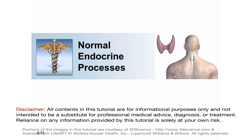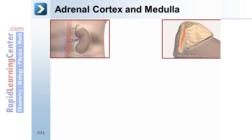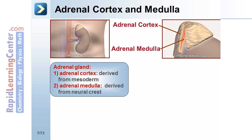We begin with a discussion of normal endocrine processes, starting with a review of the adrenal gland. The adrenal gland can be divided into the adrenal cortex, derived from mesoderm, and the adrenal medulla, derived from the neural crest.